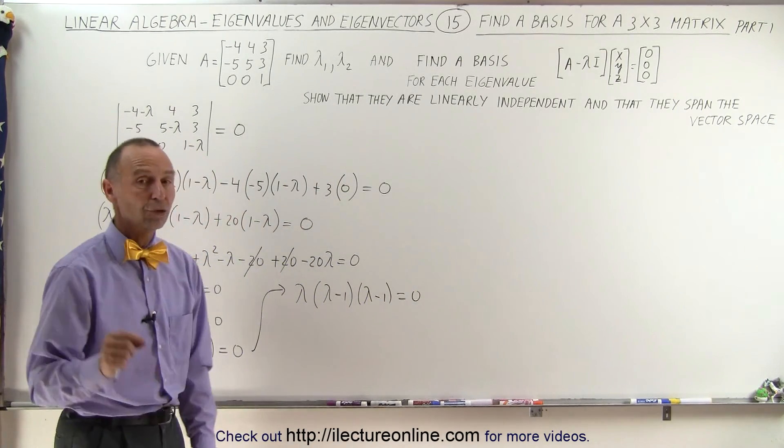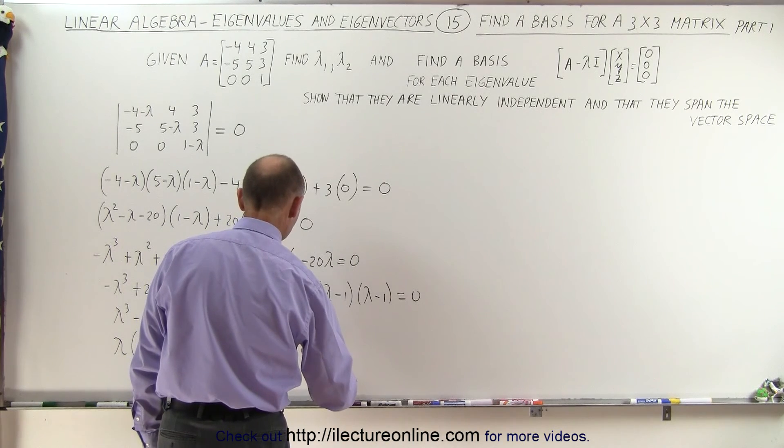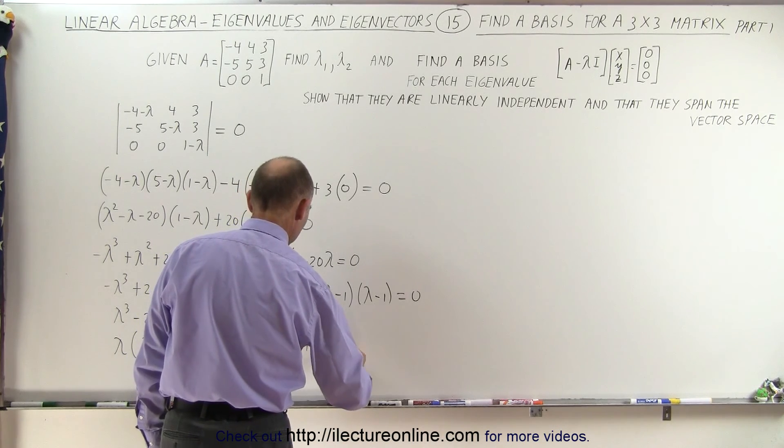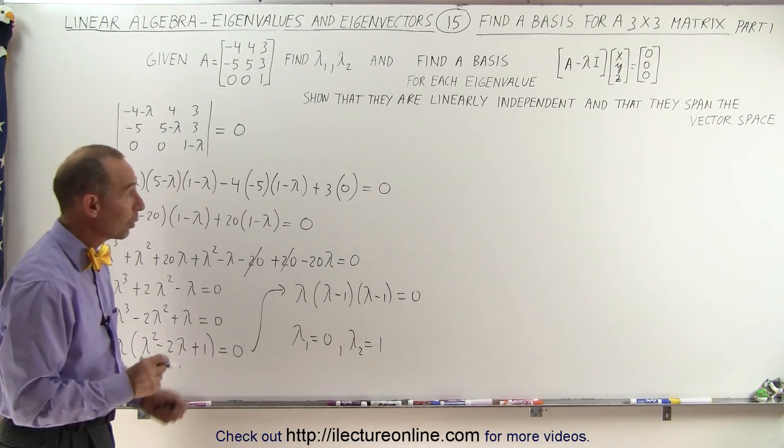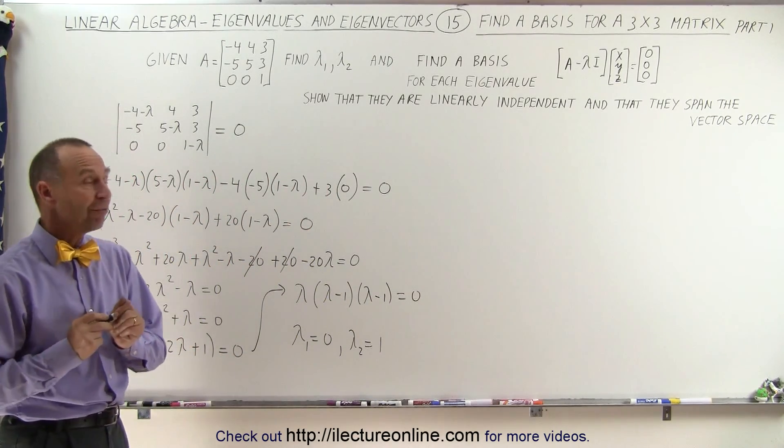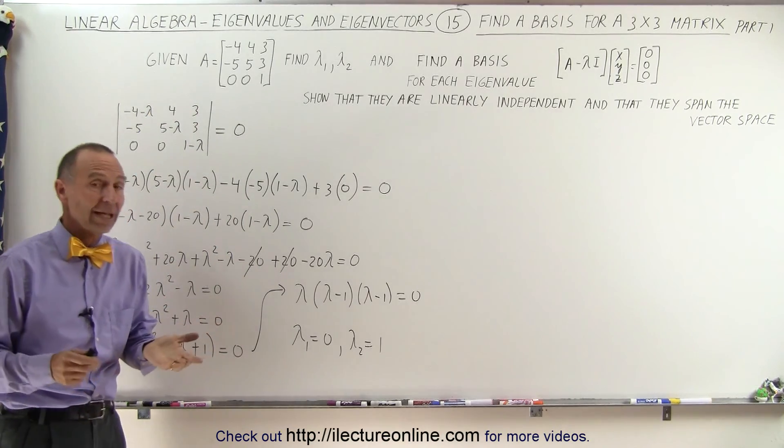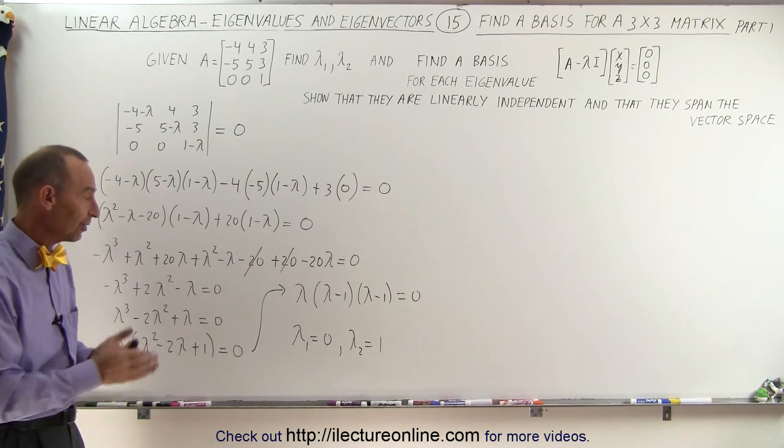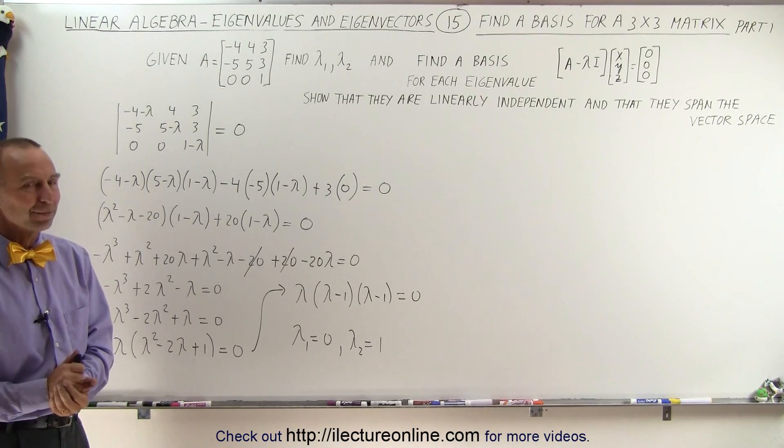In other words I end up with a double root, which means there's only two possibilities. The eigenvalue of the first one is equal to 0. And lambda sub 2 is equal to 1. And that's a double root. So those are the two eigenvalues of this particular matrix. Even though it's a 3 by 3, and you normally expect three eigenvalues, in this case since there's a double root there's only two eigenvalues. And that's how it's done.